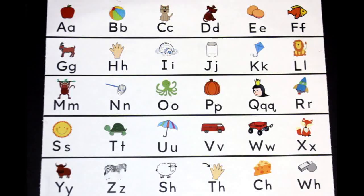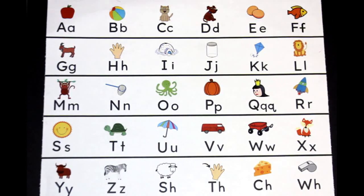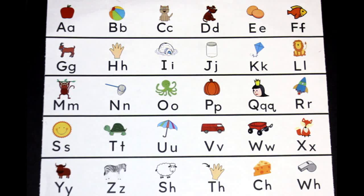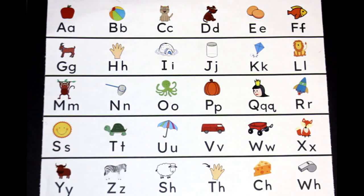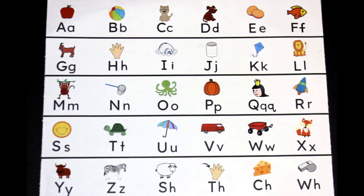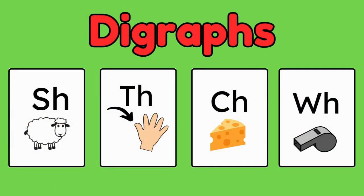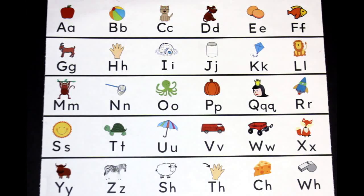We're going to sing and point to the letter sounds. There are 26 letters in the English alphabet, and we're going to learn the sounds that they make. We're also going to add in these new sounds at the end. When these letters get together, they make a new sound, and we call those digraphs. All right, let's learn the letter sounds.